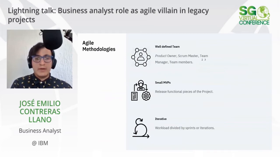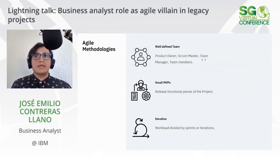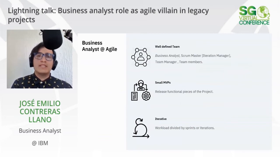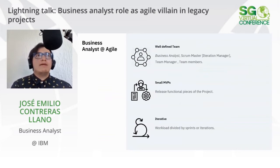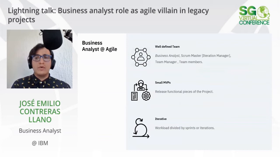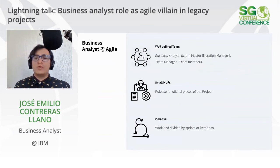This is where I have some disagreement: for me, the product owner is not part of the team — the product owner is who gives the requirements, what the development team needs to deliver to the client. So the well-defined agile team should be a business analyst, a scrum master or iteration manager, a team manager, and the development team members. With this, the agile team has a real person taking care of requirements, understanding what the client needs and wants, and providing that solution to the development team.